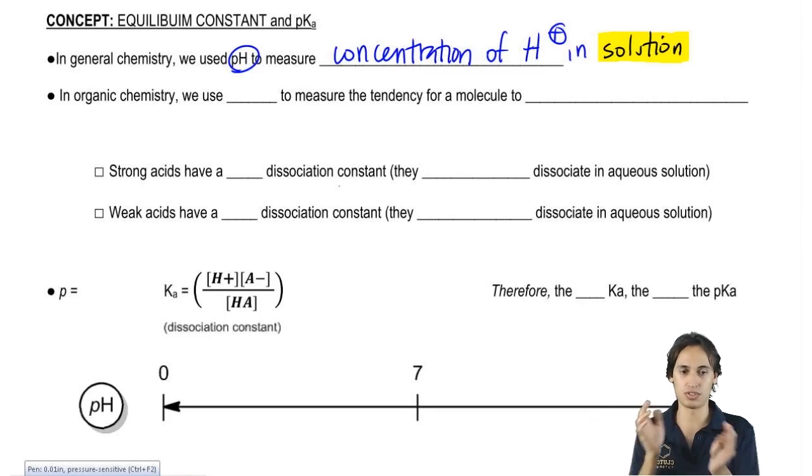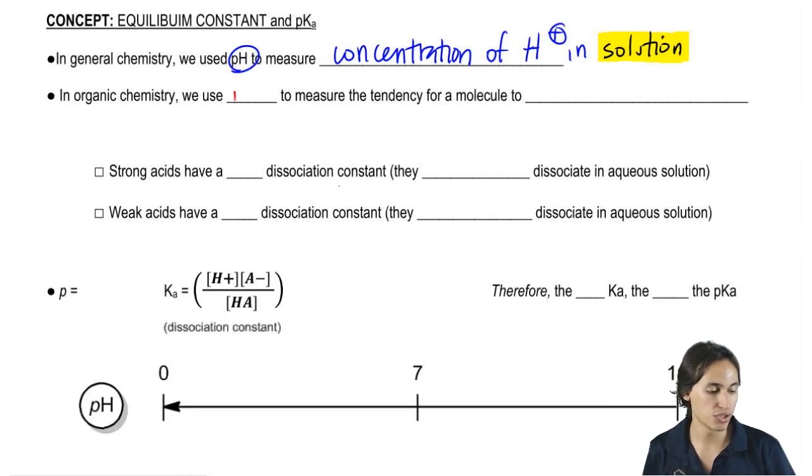pH just tells me how many H+ ions are circulating in this test tube. I don't care about that. I care about the molecules inside - how likely are they to give away a proton. So that means we're going to use a different measure.